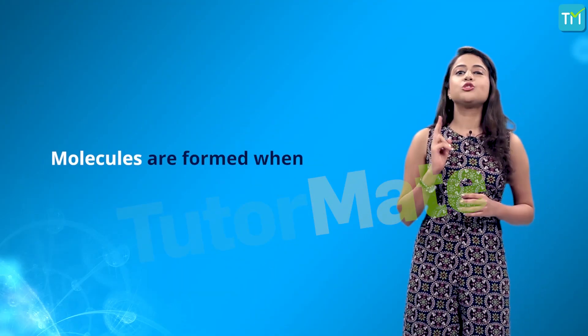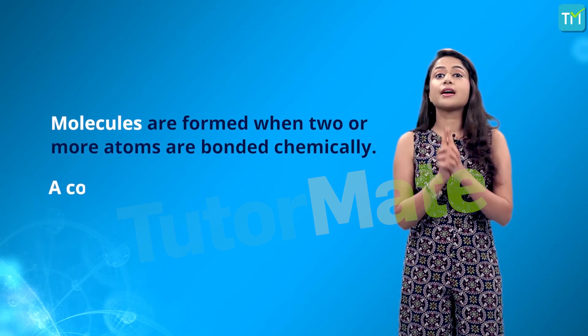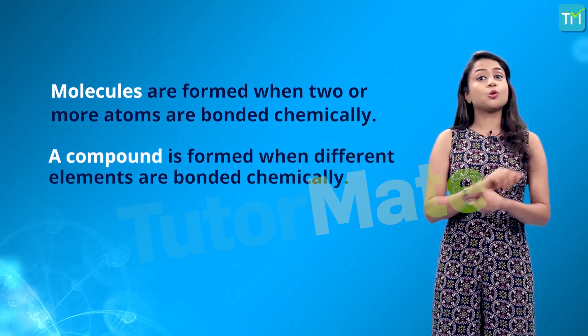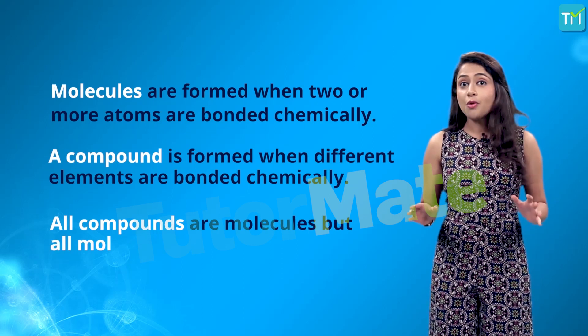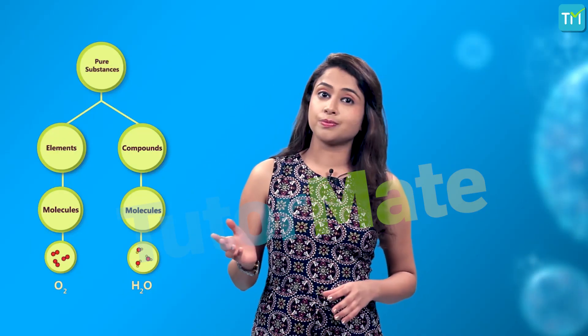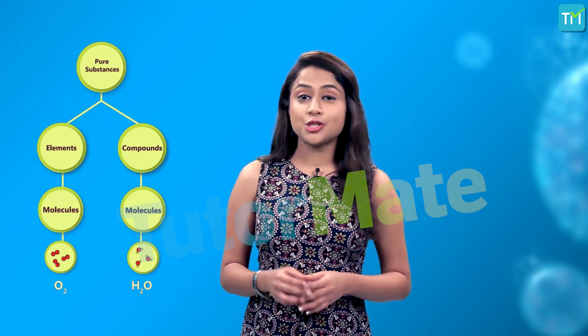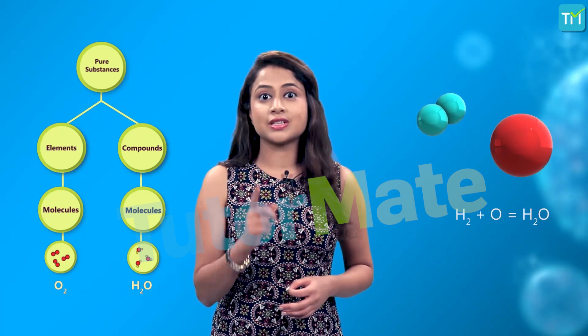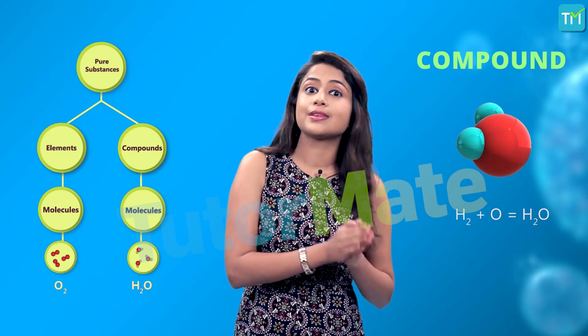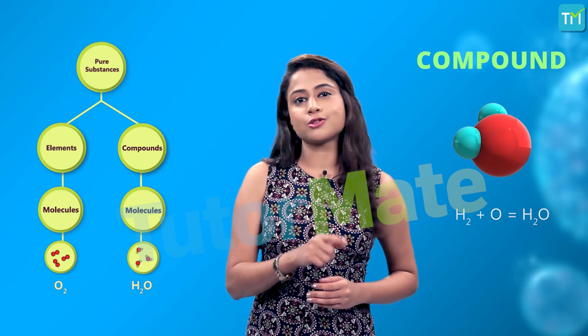Before we jump to the next video, let's do a quick recap. Molecules are formed when two or more atoms are bonded chemically. A compound is formed when different elements are bonded chemically. So all compounds are molecules, but all molecules are not compounds. For example, two atoms of oxygen will only form a molecule, not a compound, because it is made up of only one element — oxygen. However, two atoms of hydrogen and one atom of oxygen come together to form water, which is a compound because there are two elements: hydrogen and oxygen. It is also a molecule.